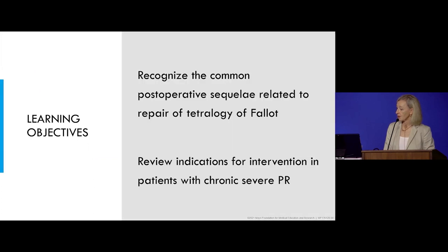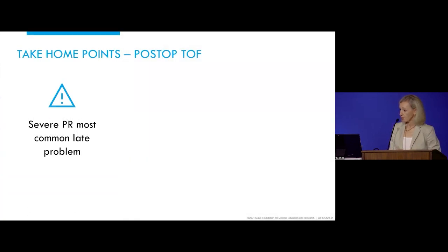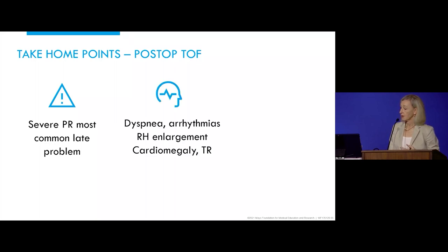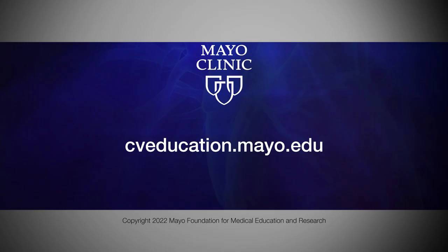She underwent pulmonary valve replacement. The learning objectives are to recognize common postoperative sequelae related to repair of tetralogy of Fallot and to review the indications for intervention. Take-home points in post-op tetralogy: severe PR is the most common late problem. Dyspnea, arrhythmias, right heart enlargement, cardiomegaly, and TR — think pulmonary valve regurgitation. Pulmonary valve replacement indications are evolving in this patient population.